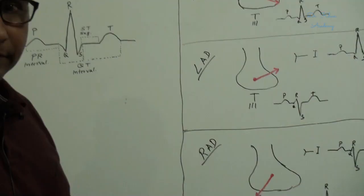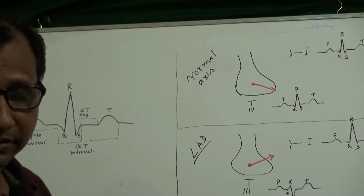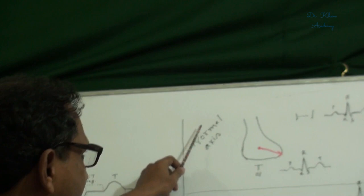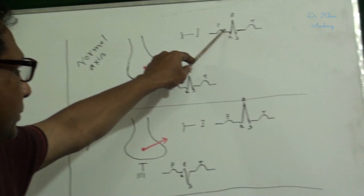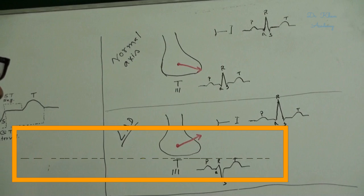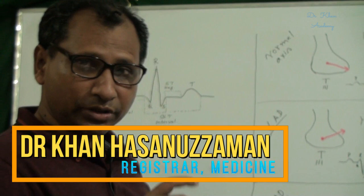Now I am going to discuss cardiac axis. In the normal axis, this vector is oriented to the left side and downwards. In this case, lead 1 shows a positive QRS complex and lead 3 also shows a positive QRS complex. So when an ECG shows lead 1 with a positive QRS complex and lead 3 with a positive QRS complex, it indicates normal axis.